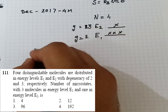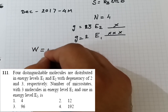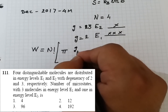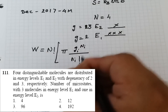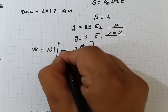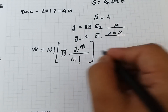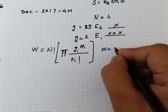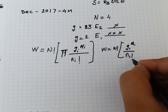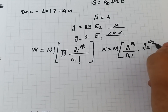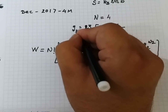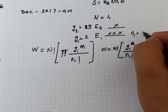When degeneracy is given, the thermodynamic probability formula is: W = N! × Π(gᵢ^nᵢ / nᵢ!). For this system: W = N! × (g₁^n₁ / n₁!) × (g₂^n₂ / n₂!). Substituting: W = 4! × (2³ / 3!) × (3¹ / 1!).